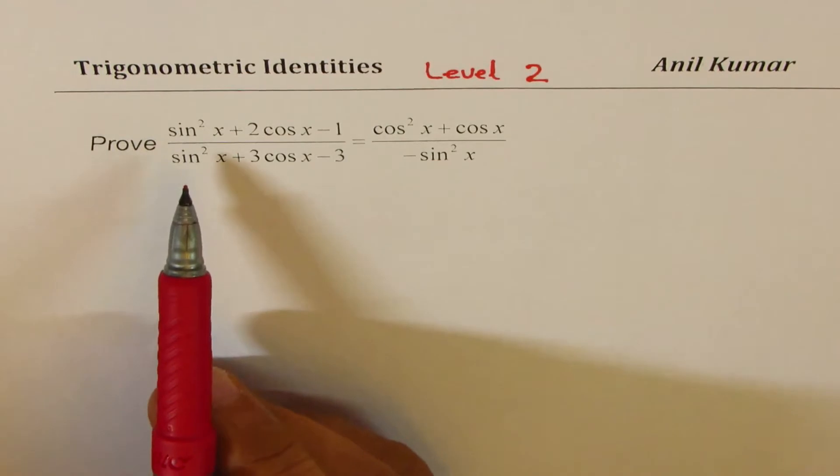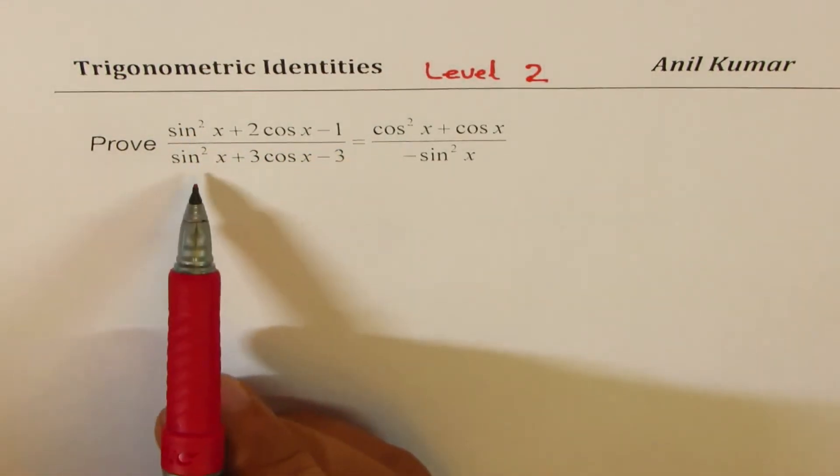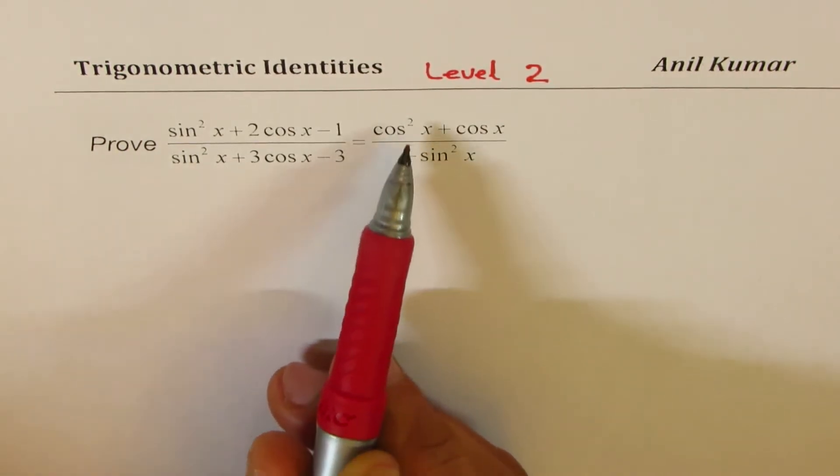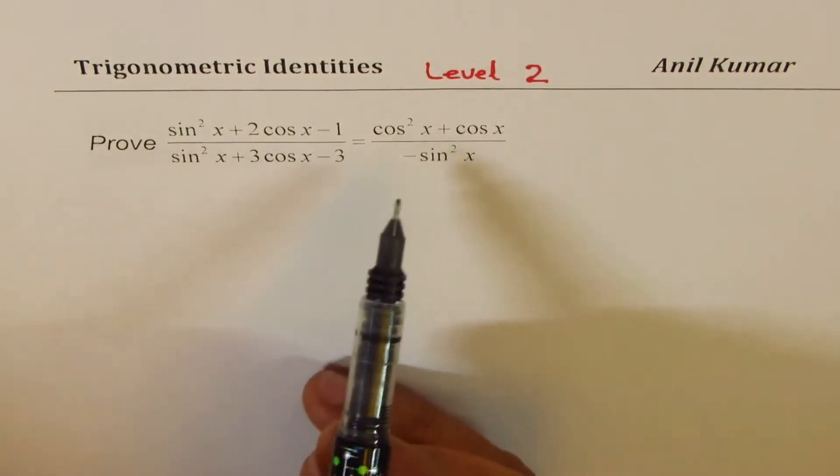We need to prove sin²x + 2cos x - 1 divided by sin²x + 3cos x - 3 equals cos²x + cos x divided by -sin²x. You can always pause the video, copy the question, prove the identity and then look into my suggestions.